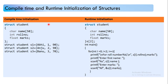We have compile-time and runtime initialization for structures as well. Compile-time is where we initialize values directly when creating the objects of the structure. Runtime initialization is nothing but taking the values from the user. Here we are using a for loop, looping through and individually updating the member data.